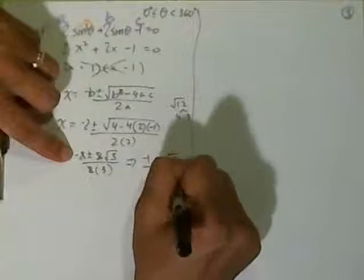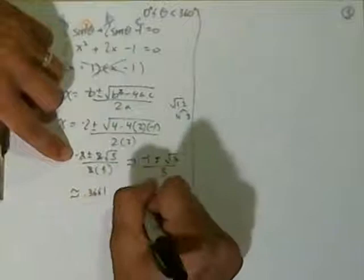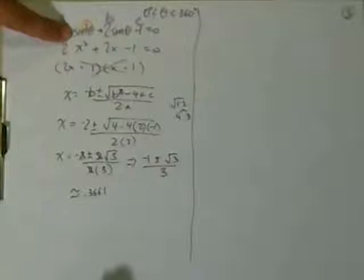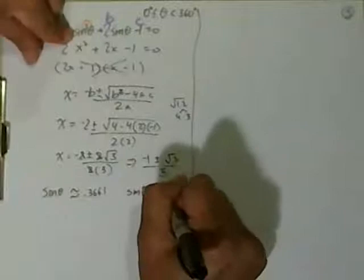And using the calculator, you're going to get approximately 0.3661, and you're going to get the sine of that angle. Remember, our x was sine of theta. It goes 0.3661, and the sine of that angle is approximately negative 1.3661. I copied it straight out of his book. Sorry about that, guys. It's okay.